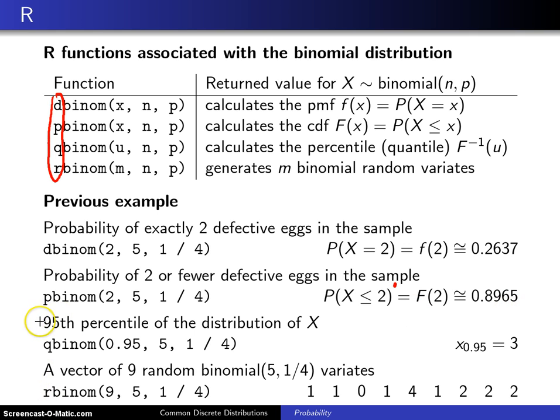These are two new questions, but I wanted to illustrate all four of these. If you want the 95th percentile of the distribution of x, that is the number of defectives in five samples drawn with replacement from the dozen eggs, you can put in q binom. You put your 0.95 up front, and then as usual, you put in n, and you put in p, and this will tell you that 3 is the 95th percentile of that distribution.